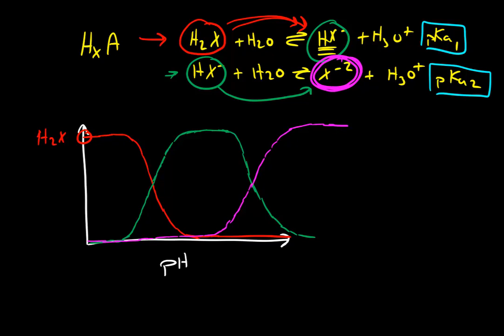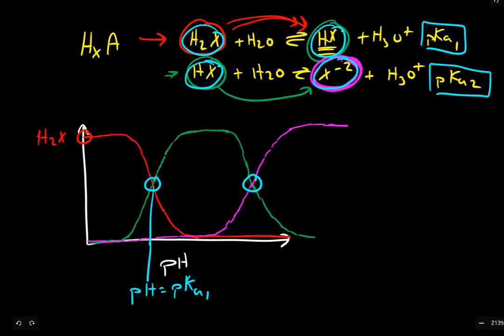The same thing remains true here. When the concentration of H2X equals the concentration of HX, at this point, the pH equals pKa1. So when we have an equal mixture of the diprotic acid and the monoprotic acid, pH equals pKa1. When the concentration of HX equals the concentration of X, then this is where the pH will be equal to pKa2.